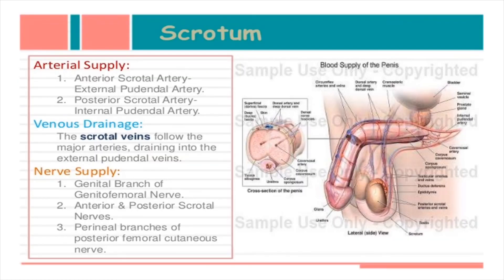The scrotum's arterial supply comes from the anterior scrotal artery (from the external pudendal artery) and the posterior scrotal artery (a branch from the internal pudendal artery). Venous drainage is via the scrotal veins, which follow the major arteries and drain into the external pudendal veins. The nerve supply is from the genital branch of the genitofemoral nerve, anterior and posterior scrotal nerves, and perineal branches of the posterior femoral cutaneous nerve.